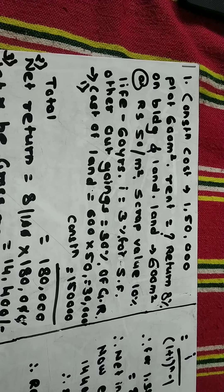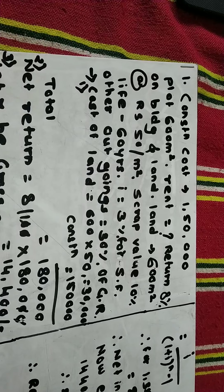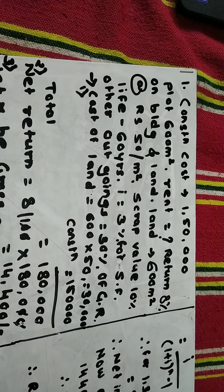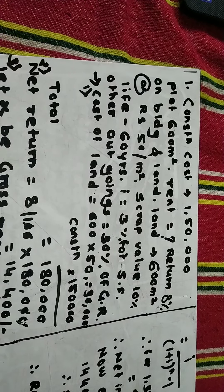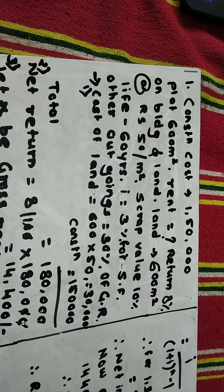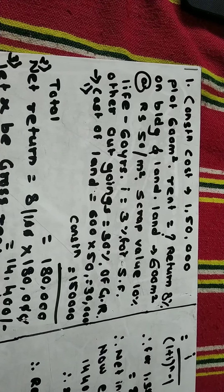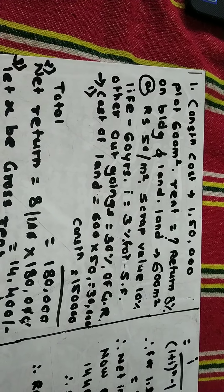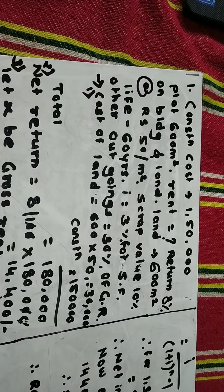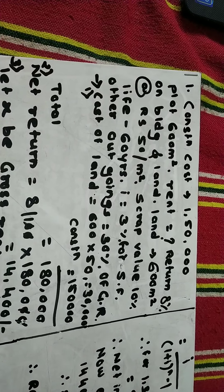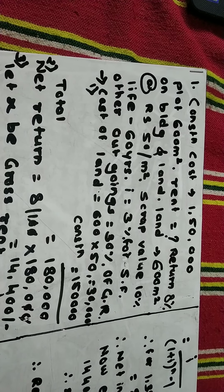Step 1: Find the cost of land. The cost of land is 600 into 50, which equals rupees 30,000. The construction cost is rupees 1 lakh 50,000. Adding both, the total investment is rupees 30,000 plus rupees 1 lakh 50,000, which equals rupees 1 lakh 80,000.